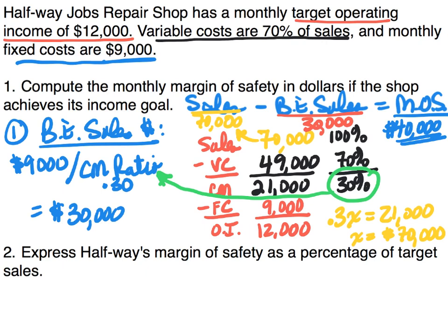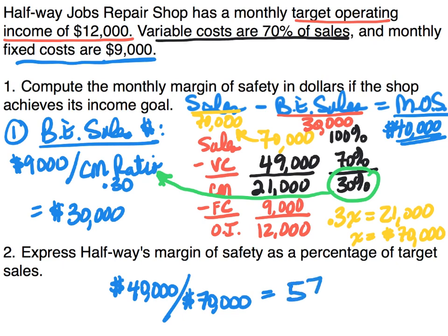For part two, we express Halfway's margin of safety as a percentage of target sales. Our margin of safety is $40,000, and target sales are $70,000, so the percentage is $40,000 divided by $70,000, which comes out to approximately 57.14%. This means our sales could drop by $40,000, or about 57%, before we begin to incur a loss.